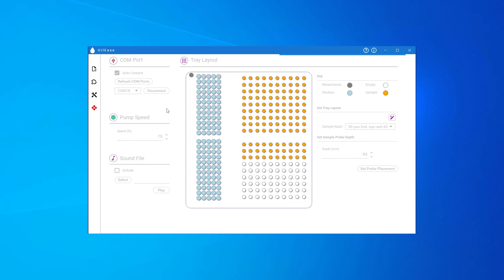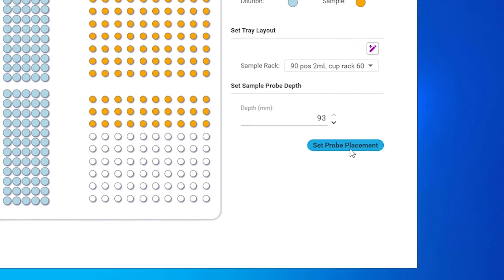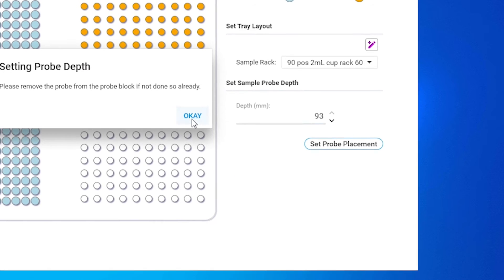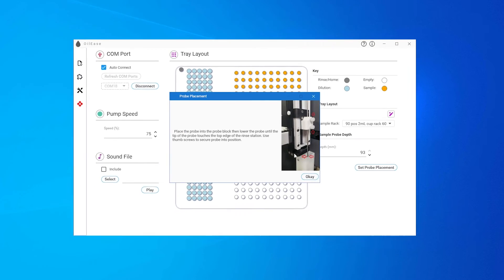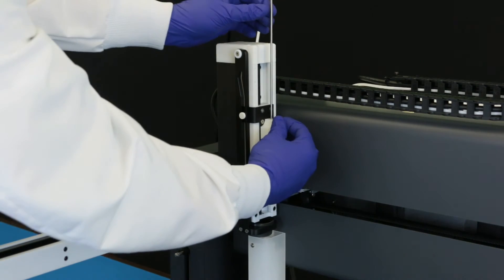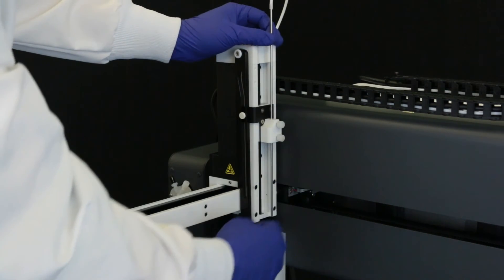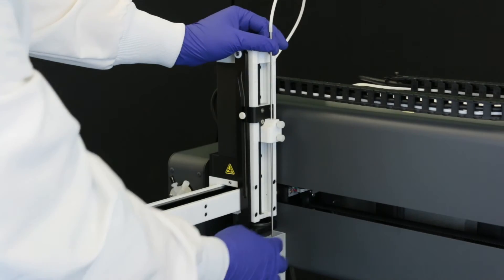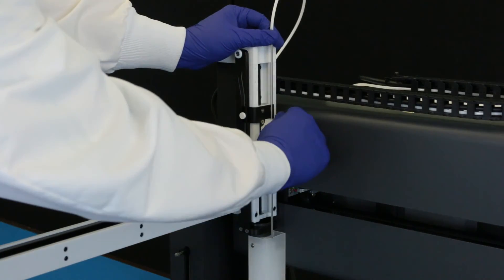On the configuration screen, click Set Probe Placement. The probe will move over the rinse station. Loosen the thumb screws and move the probe so that it just touches the top of the rinse station. Now tighten the thumb screws.